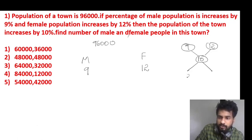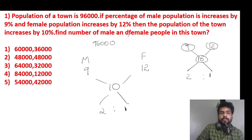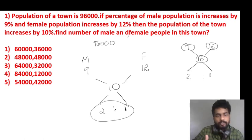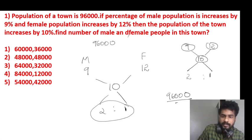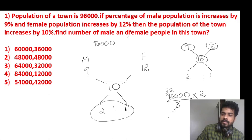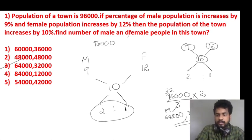So, 12 minus 10 is 2, and 10 minus 9 is 1. The ratio is 2 to 1. So with 96,000 total — divided into 3 parts — 2 parts male and 1 part female. So 1 part is 32,000. Male is 64,000. 96,000 minus 64,000 — female is 32,000. So option 3: male 64,000, female 32,000.